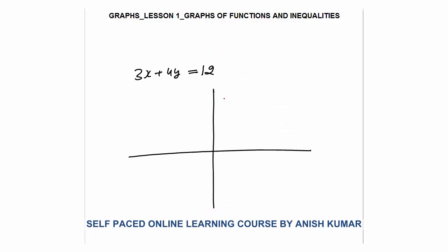Next is the graph of a straight line: 3x plus 4y equals 12. It is very simple to draw. First, take x equal to 0 — your y is 3, giving the point (0, 3). Second, take y equal to 0 — x is 4, giving the point (4, 0). Join these two points and you will get the straight line. Each and every point on this entire line satisfies the equation 3x plus 4y equals 12.